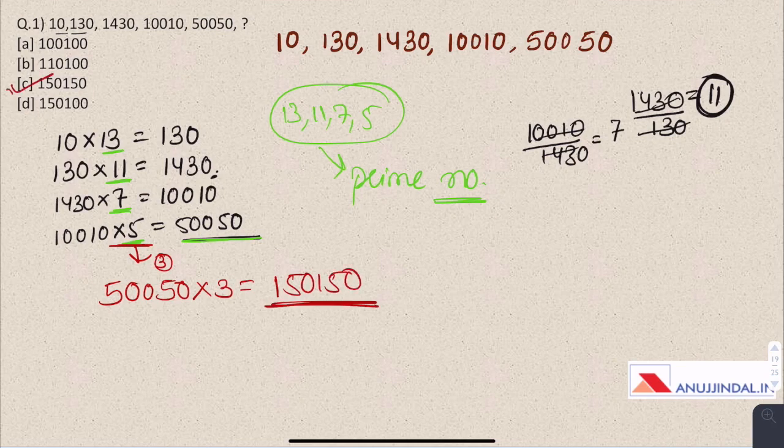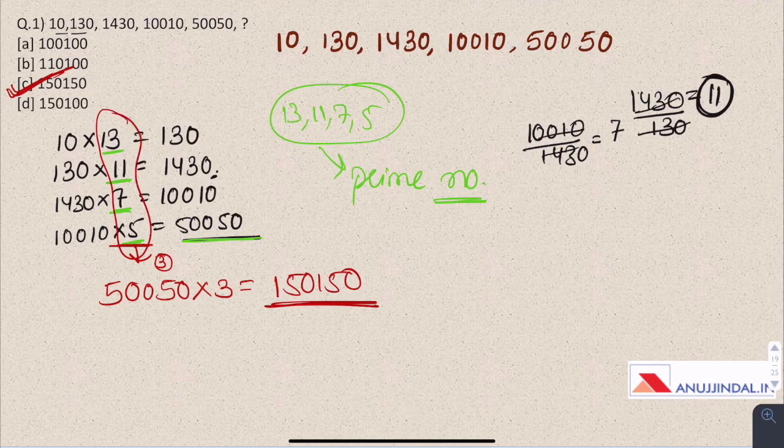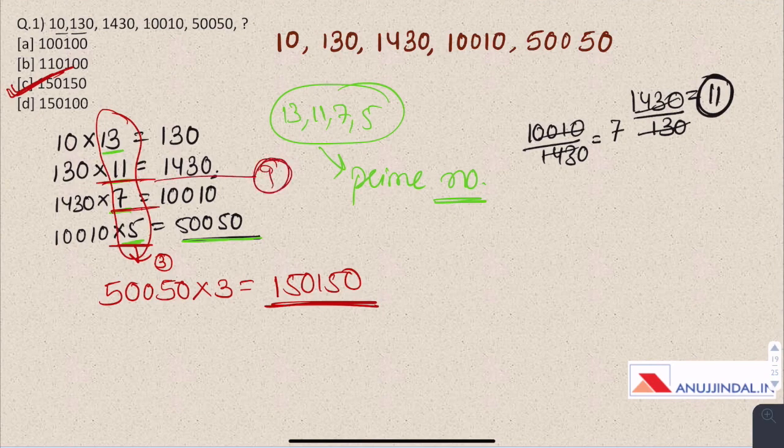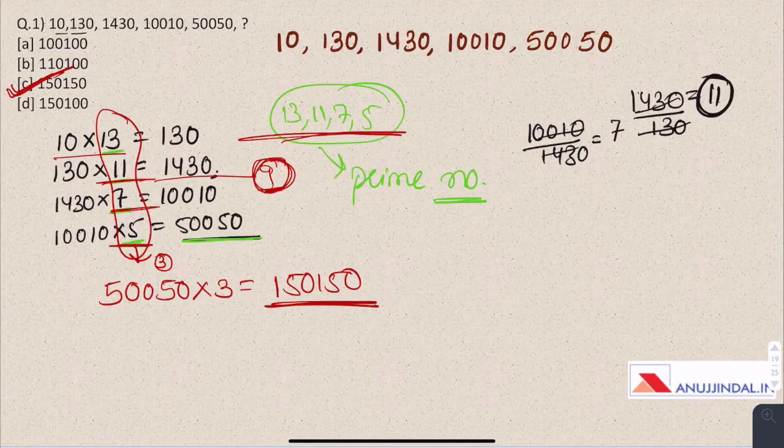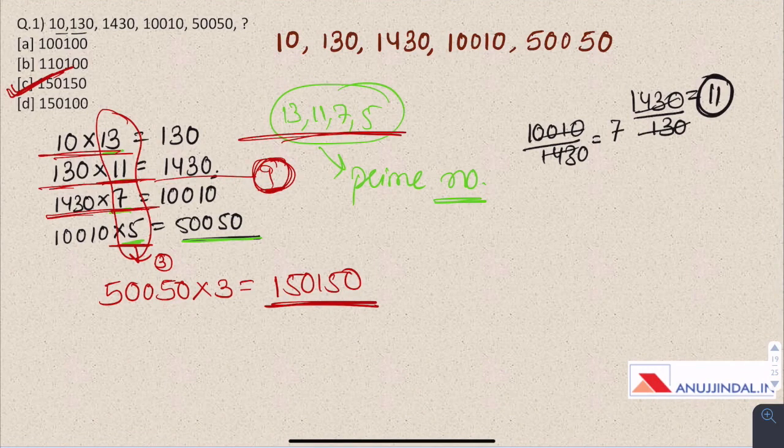So the answer is C. Here it is very important to realize that these are prime numbers or else you could have thought that these are just odd numbers. Then you should notice that 9 is missing because it's not a prime number. Then you'll realize that these are prime numbers and to get the next number in the series we have to multiply them by the prime numbers in a descending order.